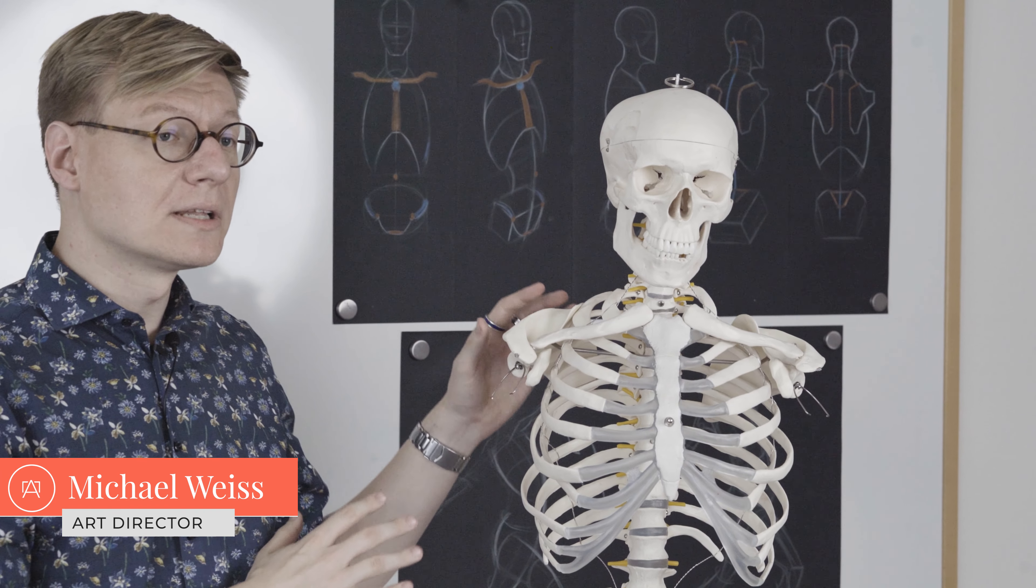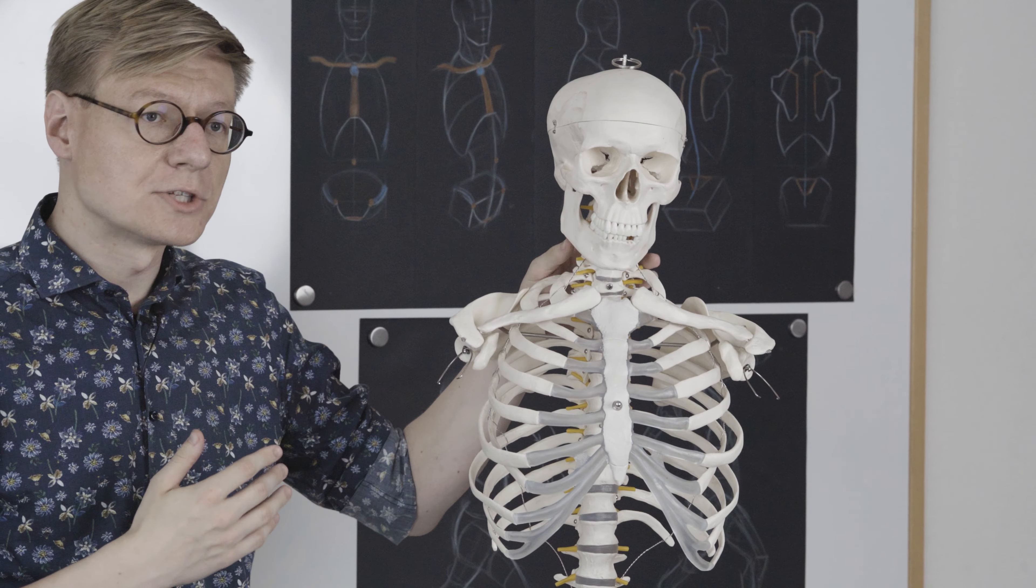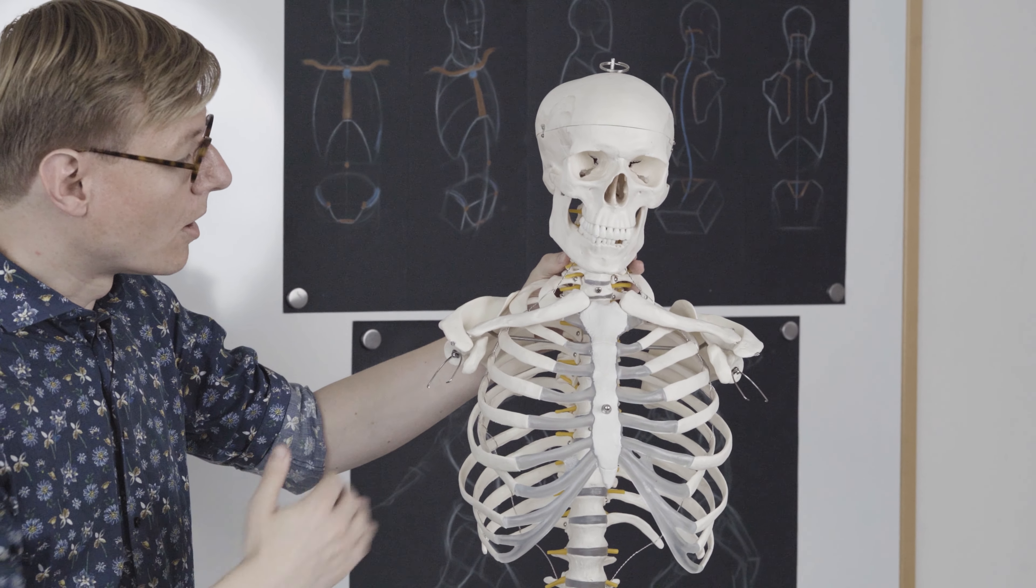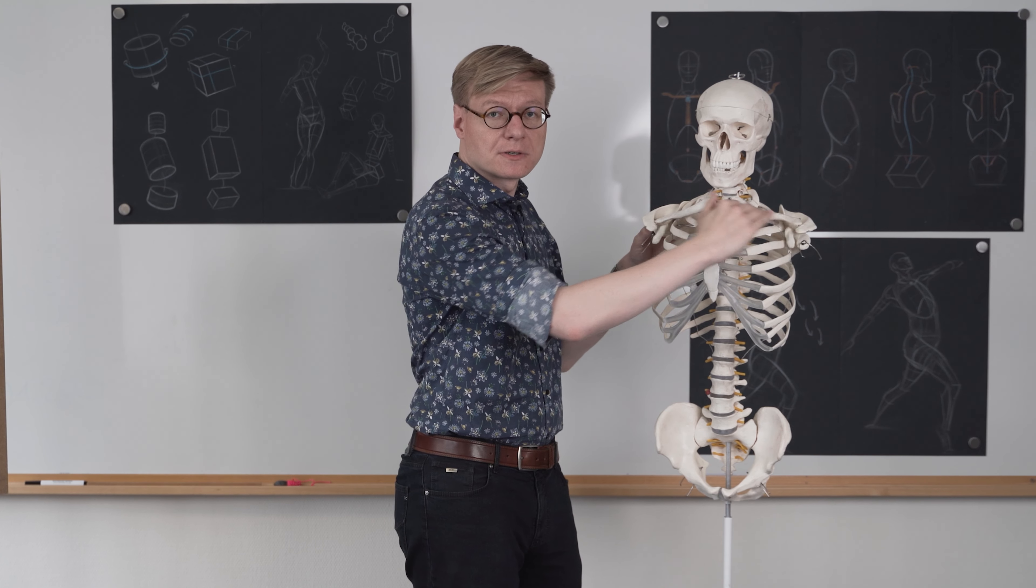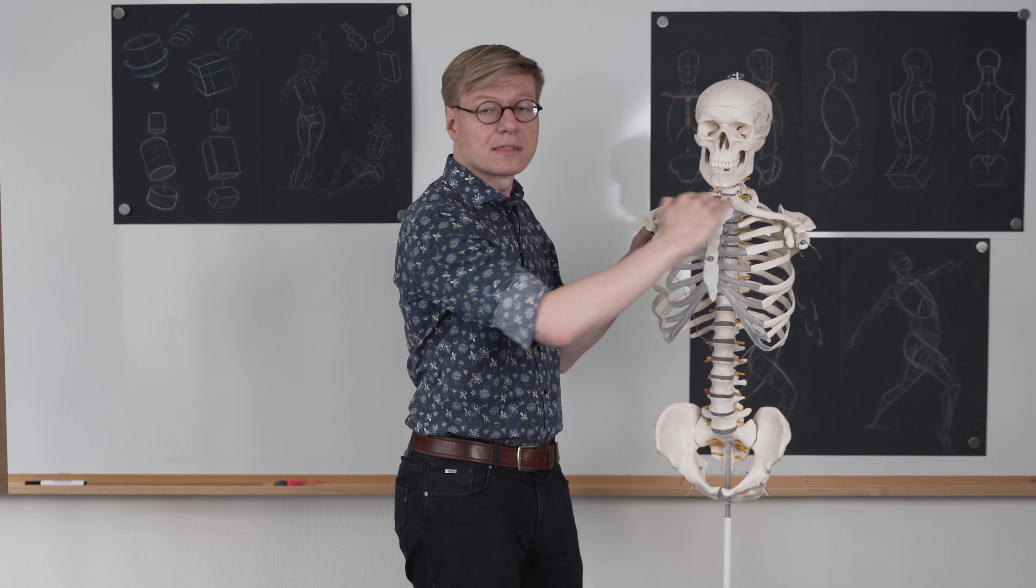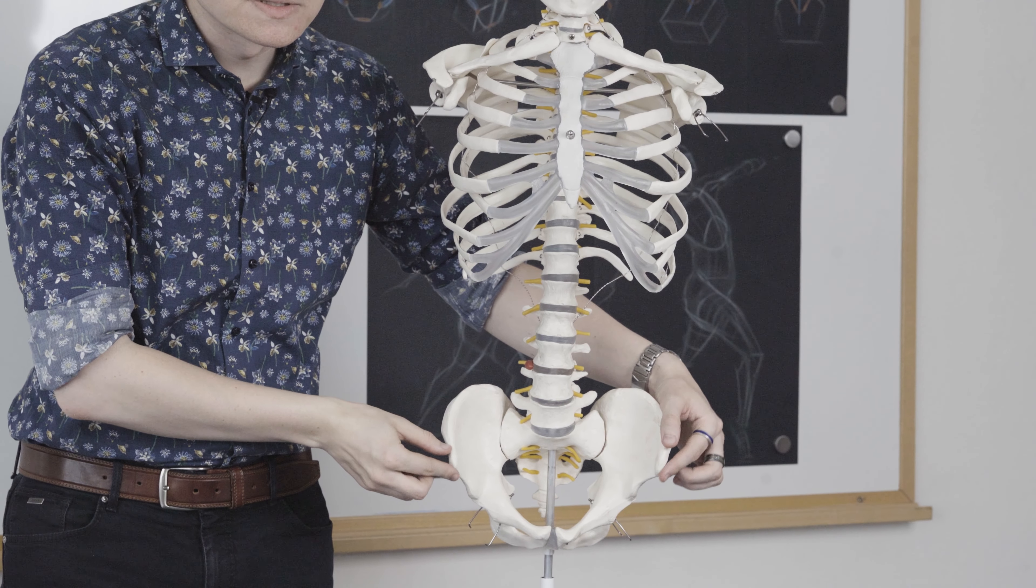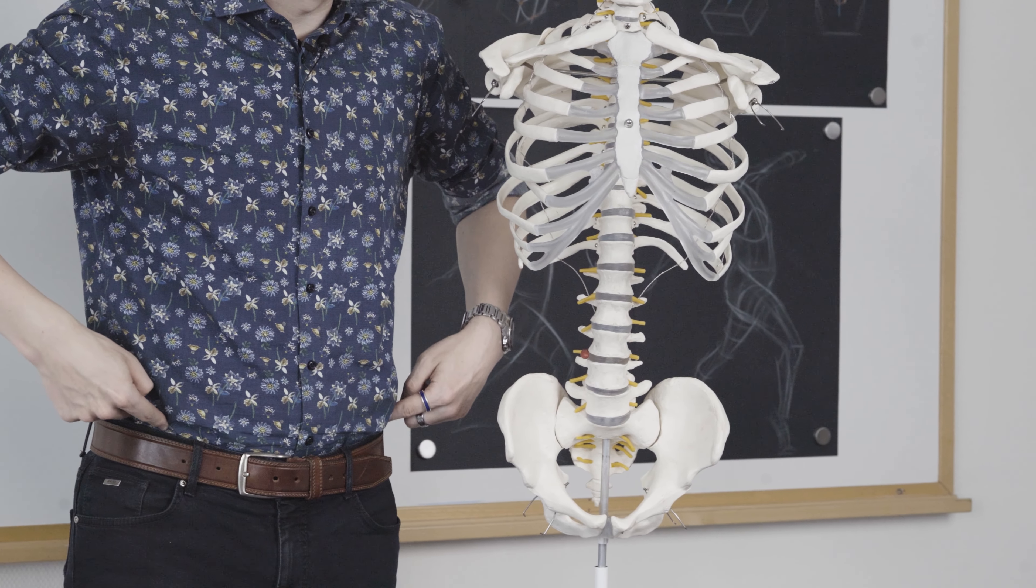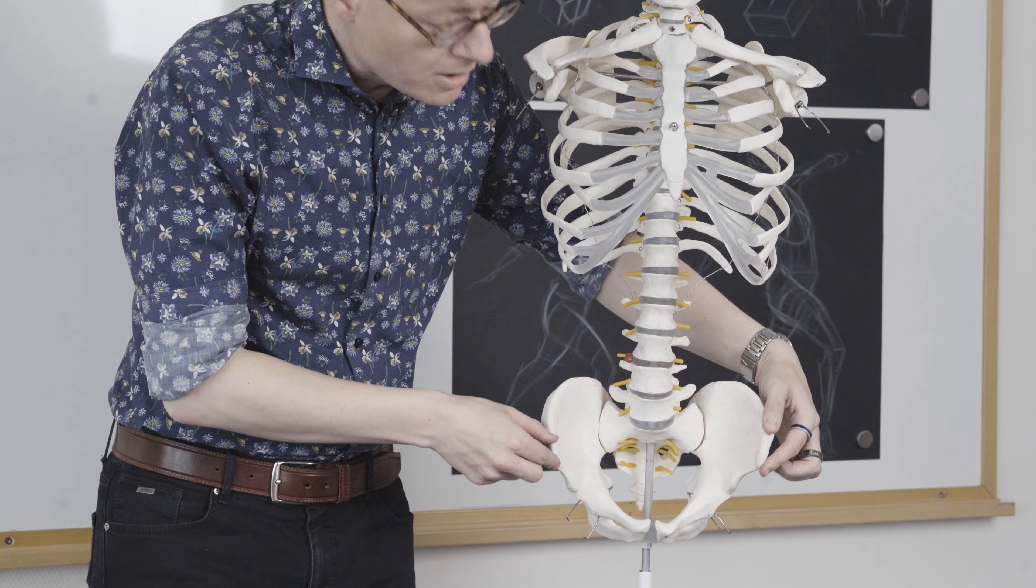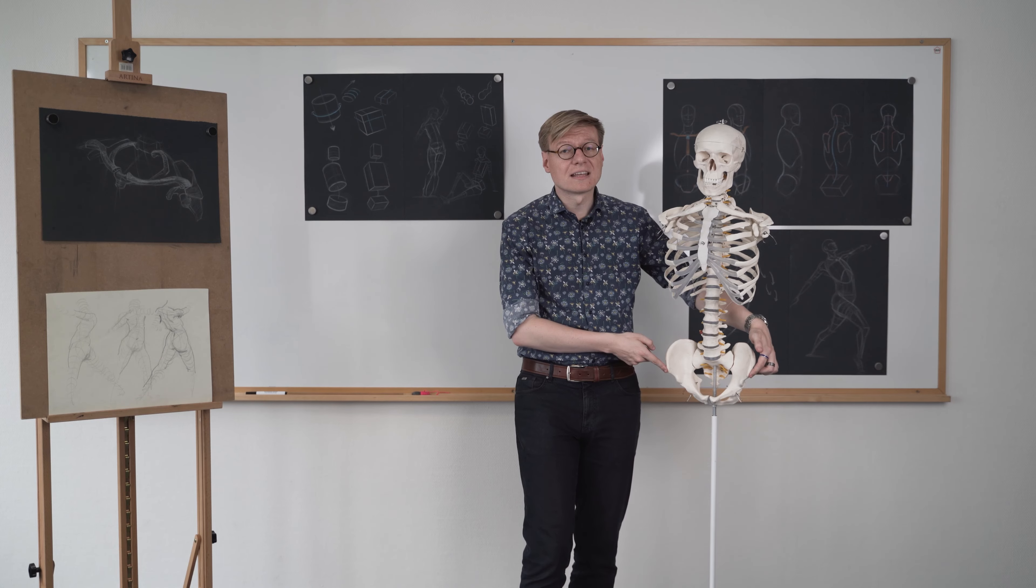First, we want to look at some bony landmarks on the skeleton. Most important for the gesture of a human position are the shoulders and the pelvis. On the shoulders, we can observe the clavicles and the line created by them. On the pelvis, we have these two little bumps. You can feel them on yourself as well, and they're usually very visible on a nude model. These are called the anterior superior iliac spine points, abbreviated ASIS.